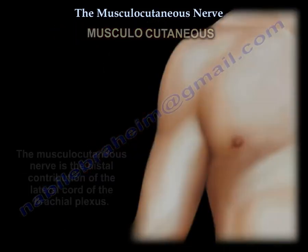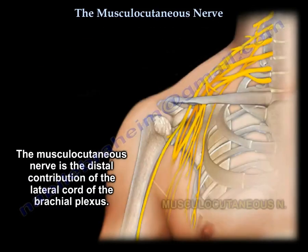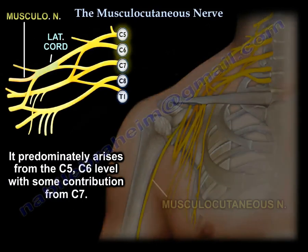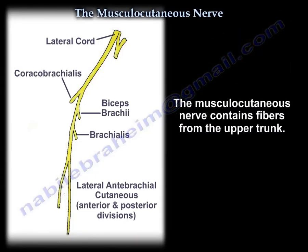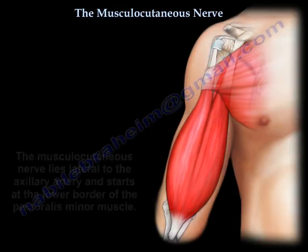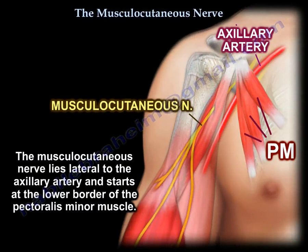The musculocutaneous nerve is the distal contribution of the lateral cord of the brachial plexus, predominantly arising from C5 and C6 with some contribution from C7. As shown in the diagram, it is the distal continuation of the lateral cord, containing fibers from the upper trunk. It lies lateral to the axillary artery and starts at the lower border of the pectoralis minor.